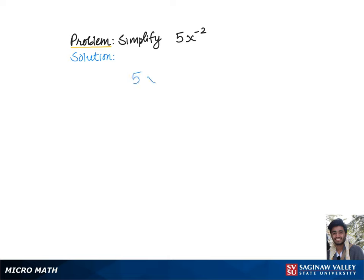To simplify 5x to the negative second power, let's go over the rule of negative exponents, which says that to change negative exponents into positive, we just need to move them from numerator to denominator or from denominator to numerator.